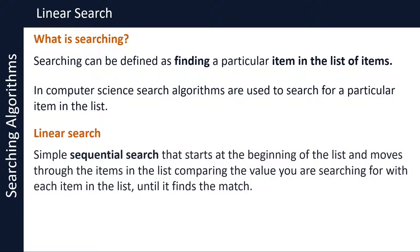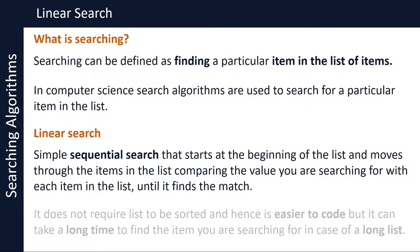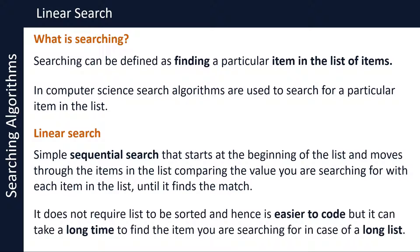Linear search is a simple sequential search that starts at the beginning of the list and moves through the items, comparing the value you are searching for with each item in the list until it finds the match. Linear search does not require lists to be sorted and hence is easier to code. But since it does not require lists to be sorted, it can take a long time to find the item you are searching for in case of a long list.